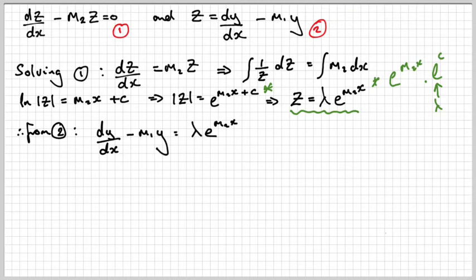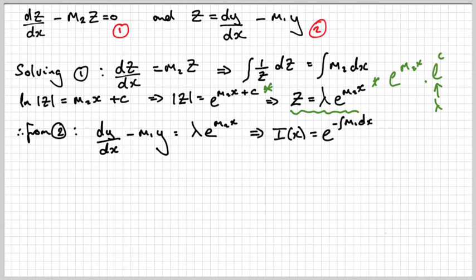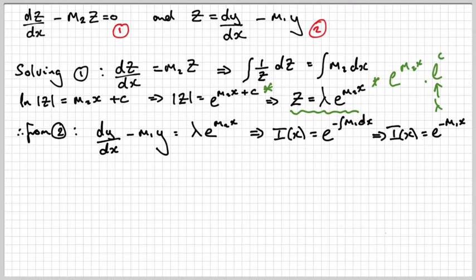From equation 2, dy/dx minus m1·y equals z, which is λe^(m2x). This is another fairly easy differential equation to solve — we'll use an integrating factor. The integrating factor i(x) equals e to the power of minus the integral of m1 dx, which gives i(x) equals e^(−m1x).